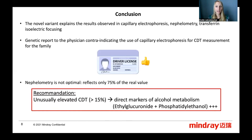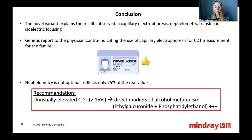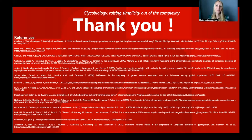The driver's license was given back. However, the immunonephelometric method is not accurate — it only reflects 75% of the real CDT value, because 1 out of 4 glycans is missing. So we recommend, in the case of unusually elevated CDT over 15%, to measure direct markers of alcohol metabolism, such as ethylglucuronide and phosphatidylethanol. Thank you. Glycobiology is raising simplicity out of this complexity.